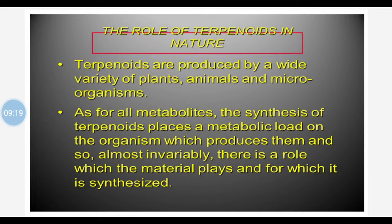The role of terpenoids in nature: terpenoids are produced by a variety of plants, animals, as well as microorganisms. The synthesis of terpenoids places a metabolic load on the organism. These terpenoids are the result of metabolic processes taking place in the plants, and they play an important role in the plants for which they are synthesized.